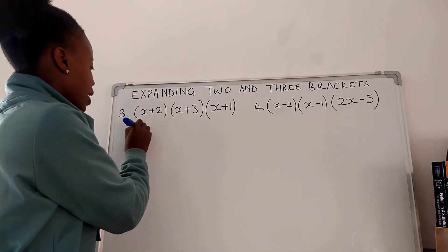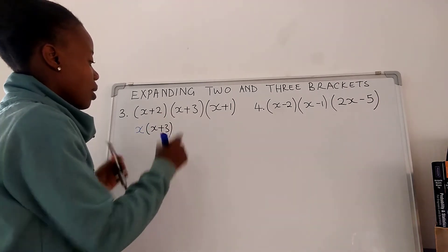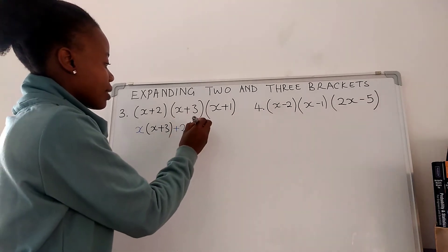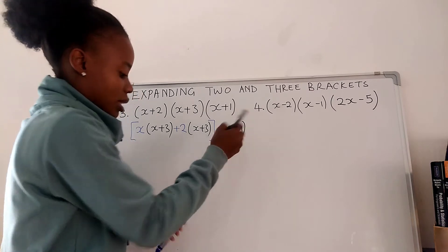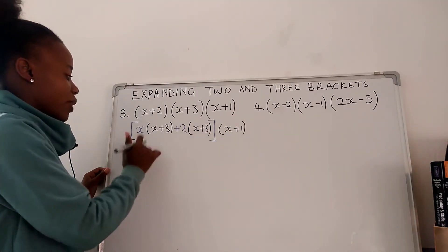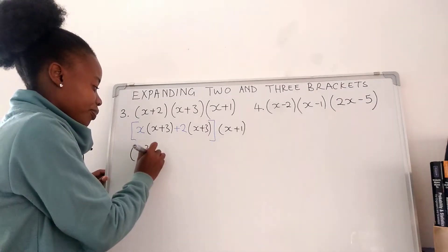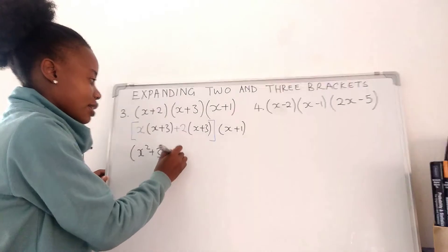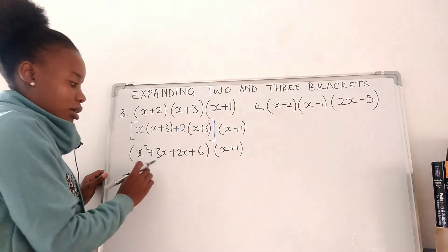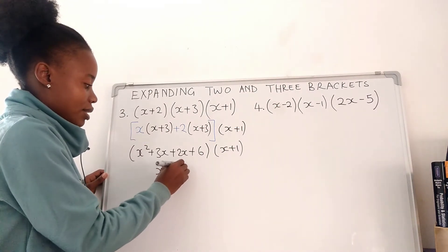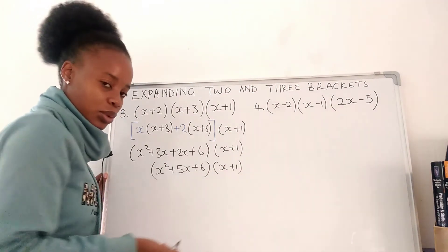So here we are just dealing with the first two brackets: x(x + 3) plus 2(x + 3), and the third bracket (x − 1) is still waiting. We remove brackets: x times x is x squared, x times 3 is 3x, 2 times x is 2x, 2 times 3 is 6. We collect like terms: x squared plus 5x plus 6. The third bracket (x + 1) is still there.